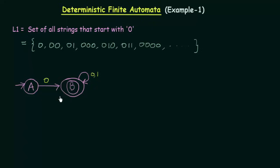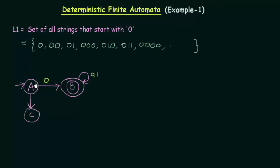But this DFA is not yet complete. We mentioned what happens if A gets input 0, but we didn't mention what happens if A gets input 1. If A gets input 1, that means 1 is the first digit — and that should not be accepted, since we only accept strings that start with 0. So I send it to another state which I call state C.